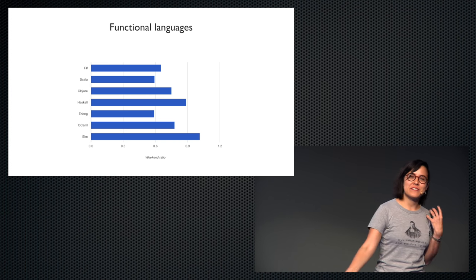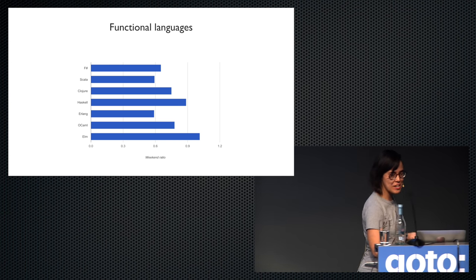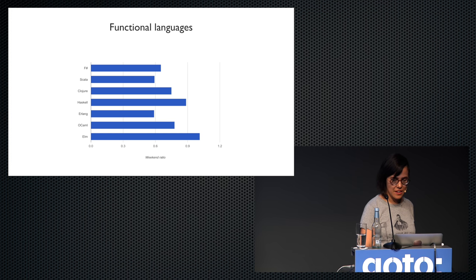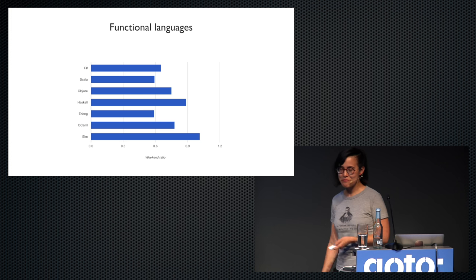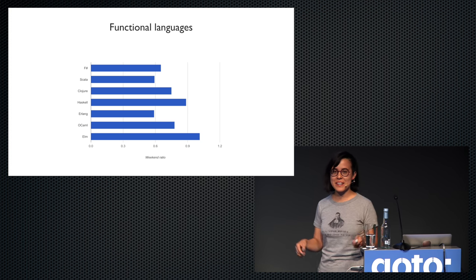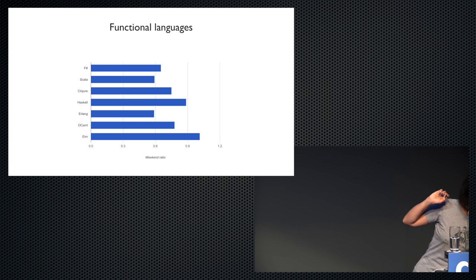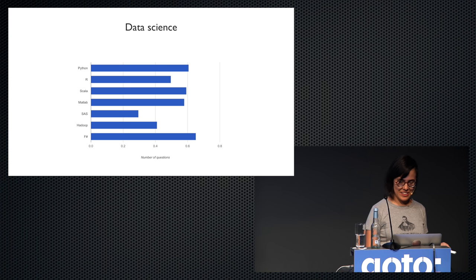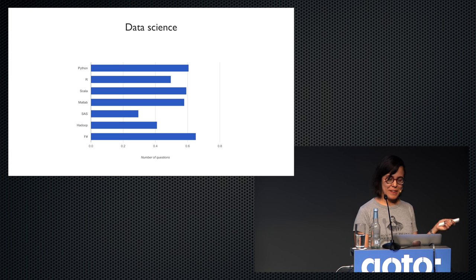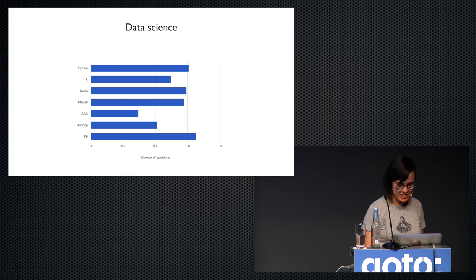Looking at functional languages: F# has a coefficient of 0.6, which is quite a lot compared to other languages. People like to play a lot with Haskell in their free time, which makes sense. And everyone's hobby project right now is Elm — it has a coefficient above 1, meaning people ask more questions over the weekend than during weekdays. For data science languages: F# is actually the most loved free-time language, the second is Python. R is not very popular over weekends, and the most enterprise-y one is SAS.